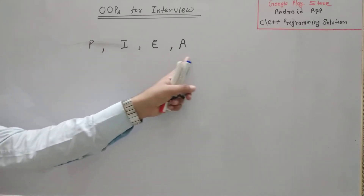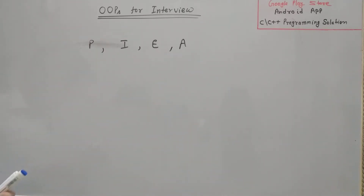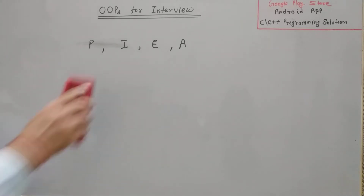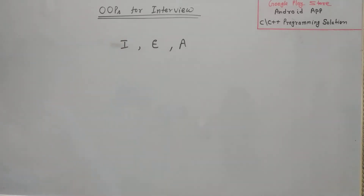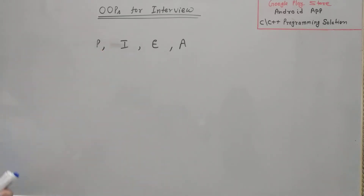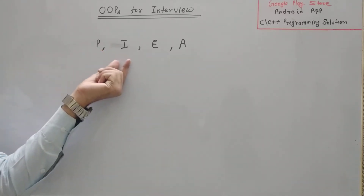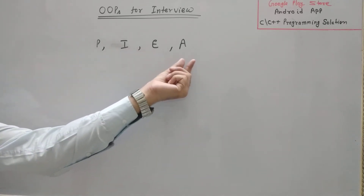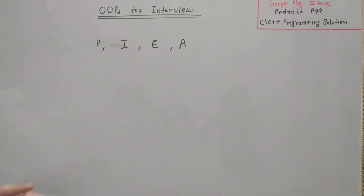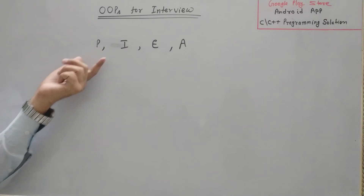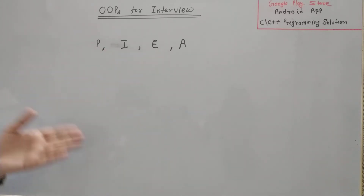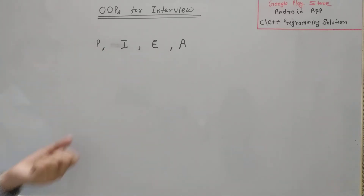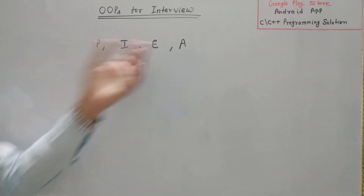These are the four important properties of OOP. When they ask the question 'Can you tell me something about OOP concept?', you should start by saying that OOP has properties like polymorphism, inheritance, encapsulation, and abstraction. After that, you can continue with the definition of each concept, or they will ask you: 'What do you mean by polymorphism?' or 'What is the difference between encapsulation and abstraction?'